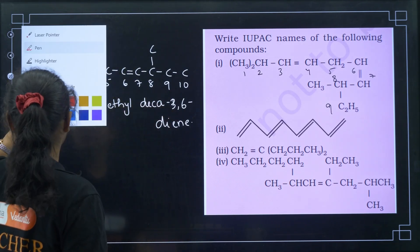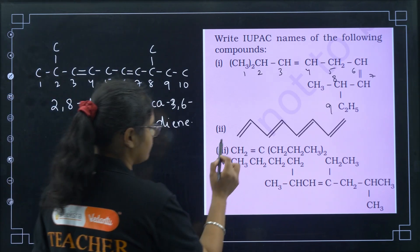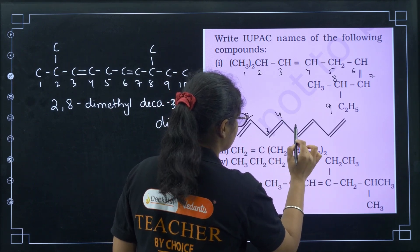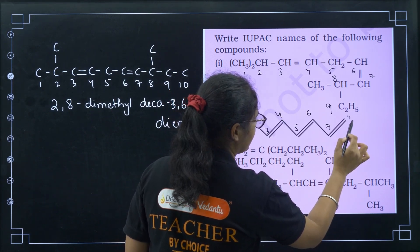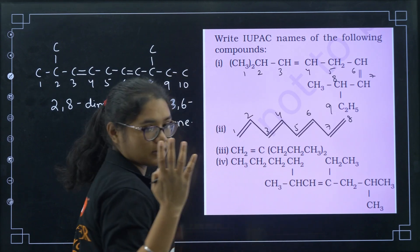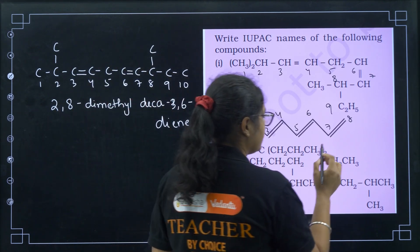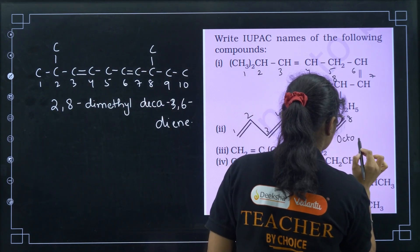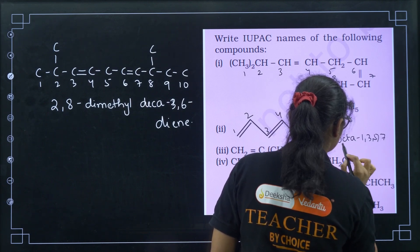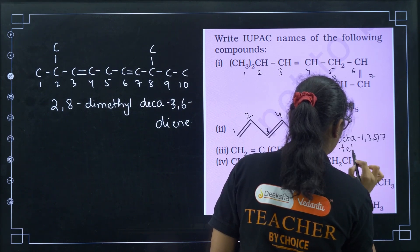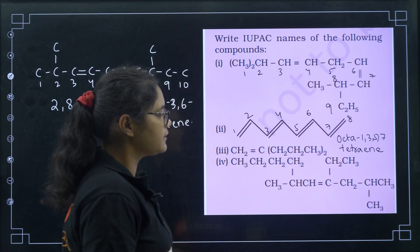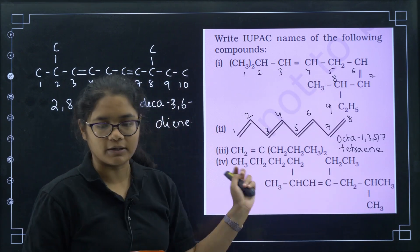The second structure: numbering gives 1, 2, 3, 4, 5, 6, 7, 8, with double bonds at positions 1, 3, 5, and 7 — that is 4 double bonds. So the name is octa-1,3,5,7-tetraene. 'Tetra' stands for 4 double bonds.